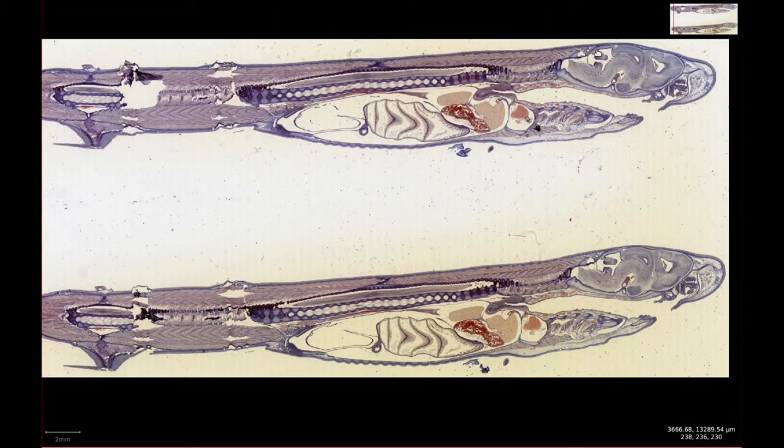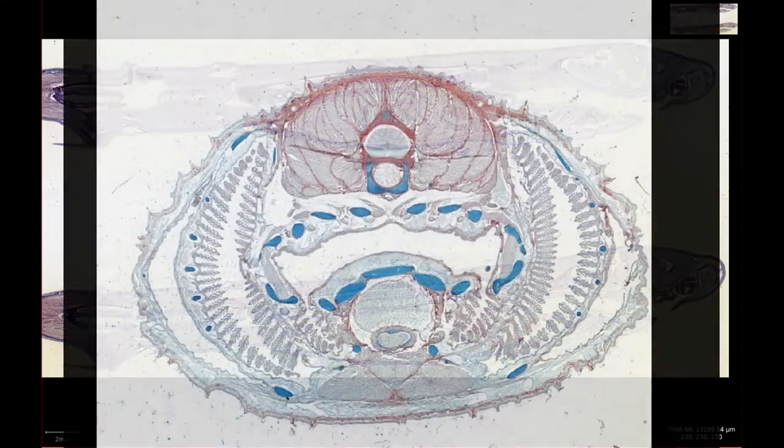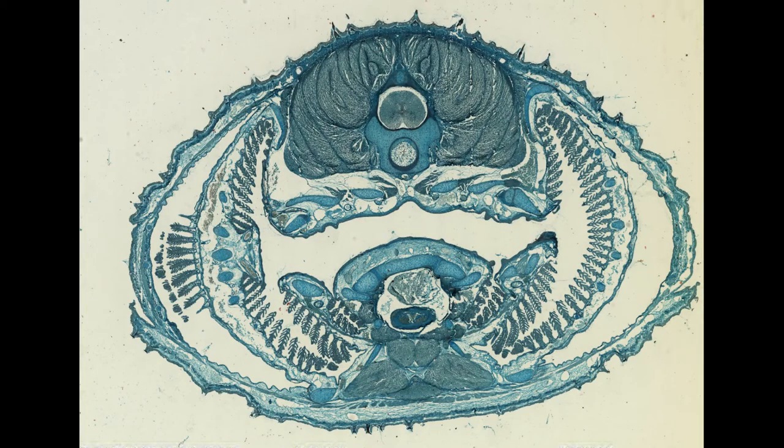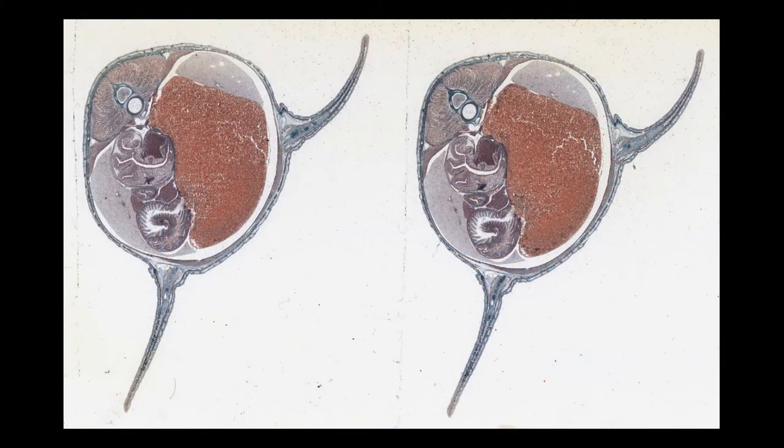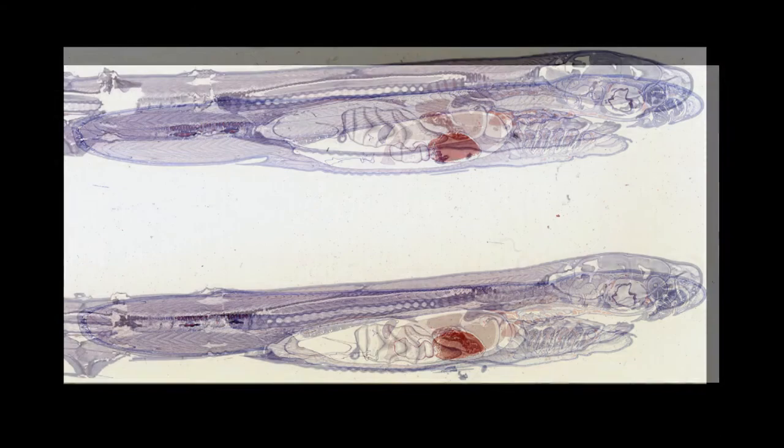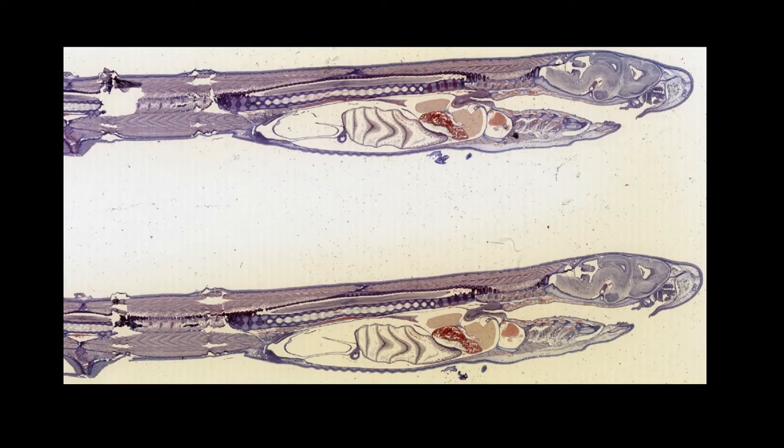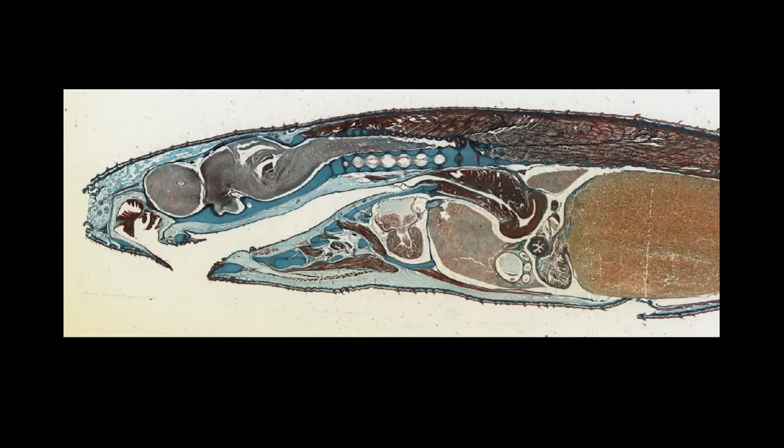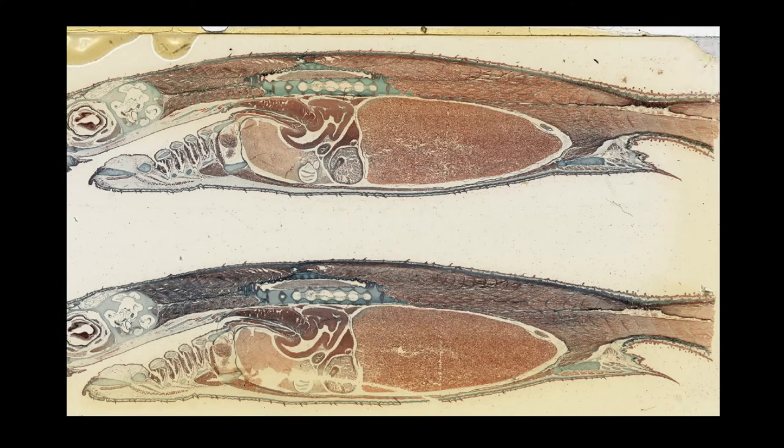Within the slide collection there are eight dogfish slides: three transverse sections, two through the gills and one through the more caudal coelom or body cavity. The remaining five are longitudinal sections through different parts of the dogfish. Given that the whole dogfish fits on a microscope slide, these are likely very young specimens which are still developing. First off, let's work out where each of these sections has come from.